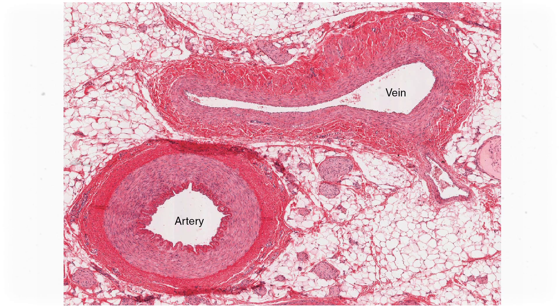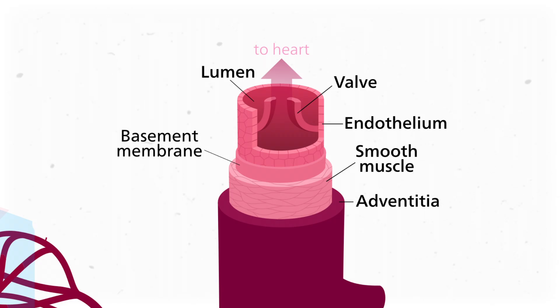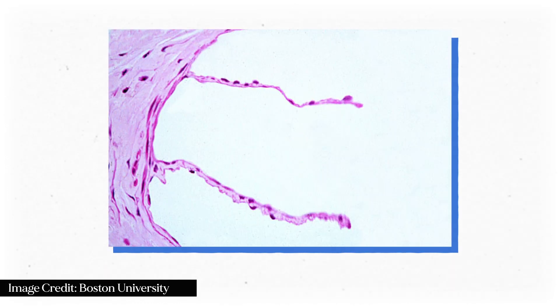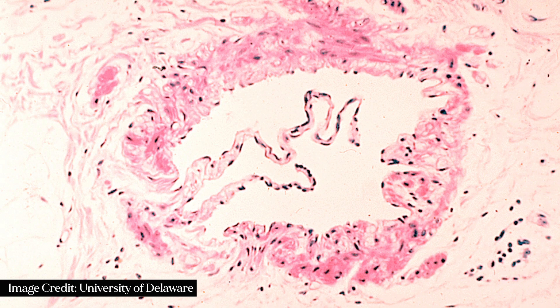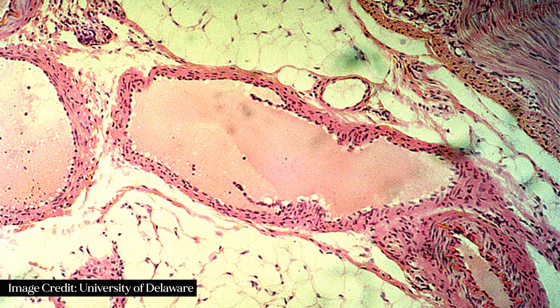Once we move over to the venous side of the vascular system, we see some other features. Veins have larger lumens compared to arteries of the same diameter, which means they deal with less pressure. But there's another big feature on the longitudinal section: valves. Most veins have valves that help prevent backflow of blood. On a histology slide, these look like little branches that extend into the lumen — if you see something thin poking into the lumen, there's a good chance you found a valve.